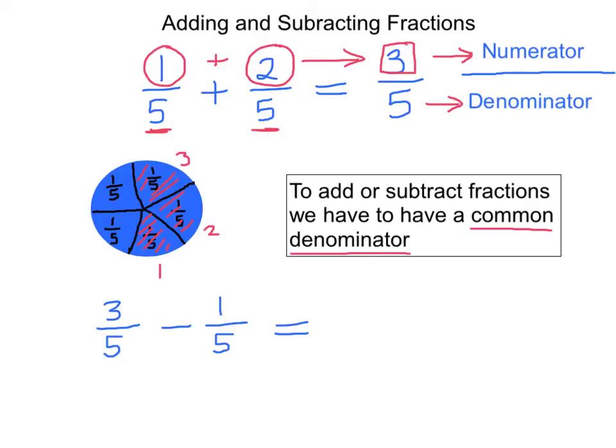So let's try a simple subtraction problem: 3 over 5 subtract 1 over 5. Now remember to do this, we have to have a common denominator, and in this case we do. The common denominator is 5. So when we get the answer, the answer will also be a fifth. Now to get the top value, all we have to do is we take the 3 and we subtract 1 from it. So 3 subtract 1 will give you the answer of the numerator. 3 minus 1 is 2, so the answer is 2.